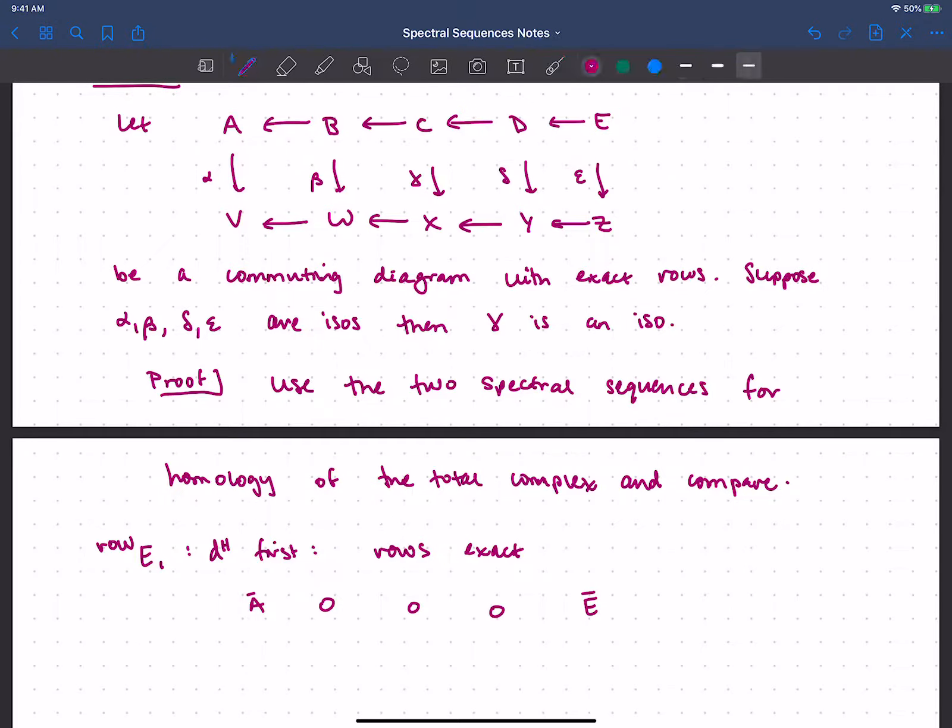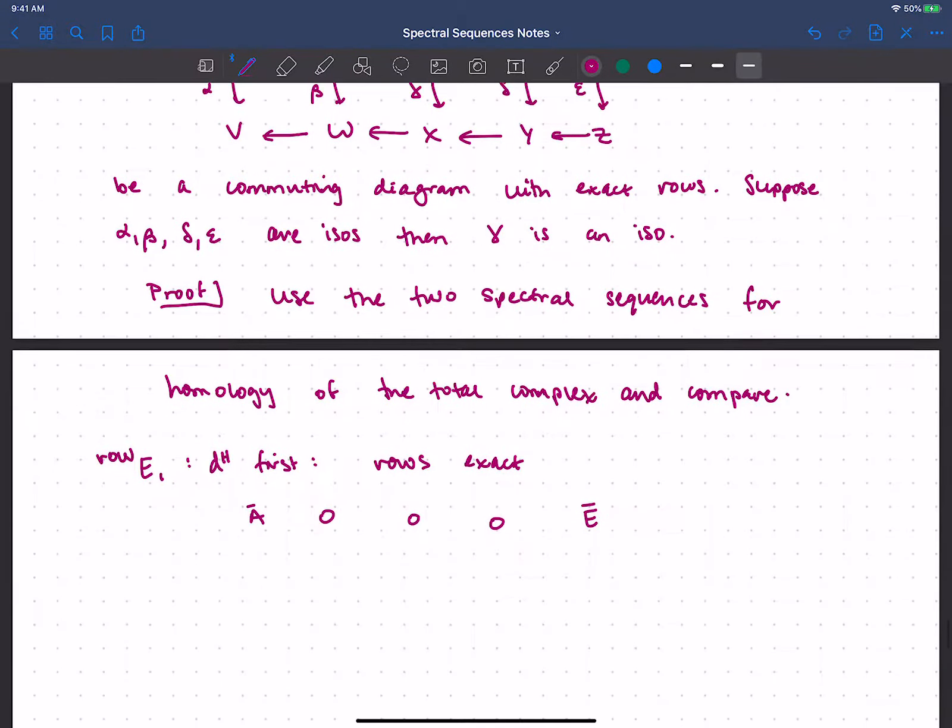I just mean that A bar is the image of this map, whatever that is. And then I guess E bar is just the kernel of this map. So maybe I should be using different symbols, but I don't even care what they are. I just mean there's something. Okay, then we'll have basically the same thing for the bottom row. So I don't know there's some V bar, but we're exact in the middle, and then the last one with some Z bar. Okay, again, I don't care what the things are.